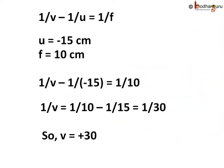So we will use the formula 1 by V minus 1 by U is equal to 1 by F. Here we need to find V, the image distance. Distance of object U is equal to minus 15 cm. It is negative because the distance is measured from the optical center in the opposite direction of the incident ray. And focal length F is equal to 10 cm.